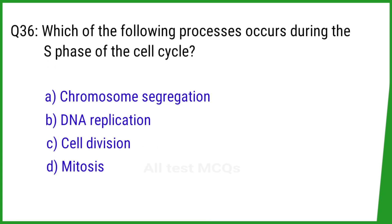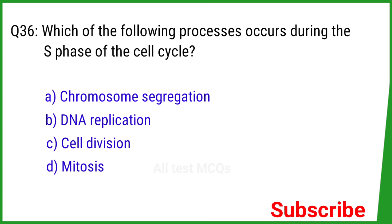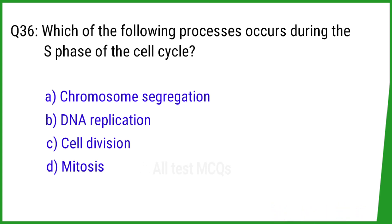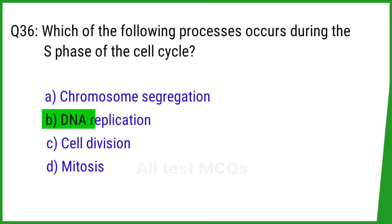Question number 36. Which of the following processes occurs during the S phase of the cell cycle? The right answer is option B: DNA replication.